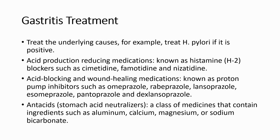How to treat gastritis? We have seen many causes and risk factors for acute gastritis, so treatment depends on the cause. Some medications we can use include histamine blockers such as cimetidine, famotidine, and nizatidine. Acid-blocking and wound-healing medications known as proton pump inhibitors include omeprazole, rabeprazole, lansoprazole, esomeprazole, pantoprazole, and dexlansoprazole.